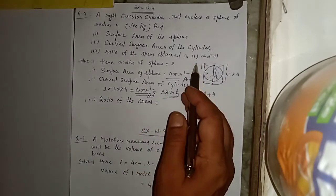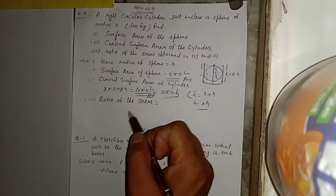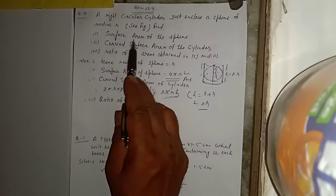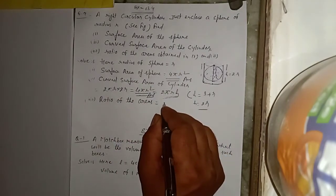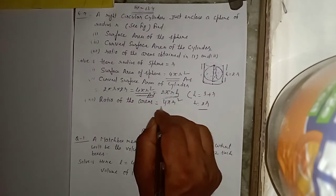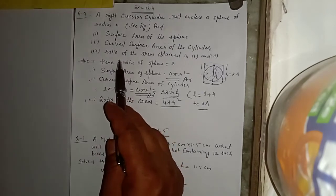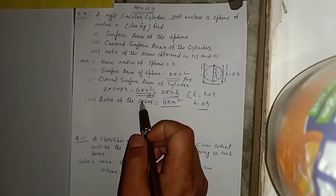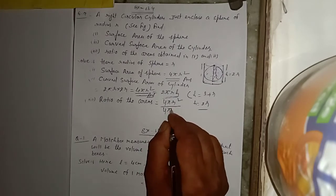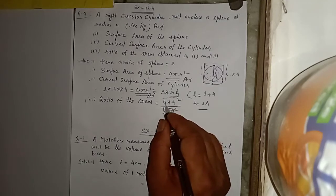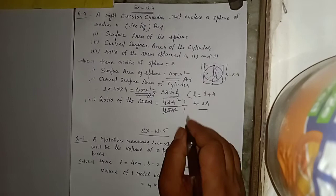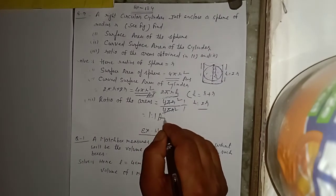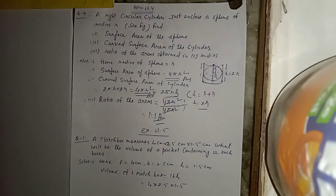Third part में ratio of areas — first and second। Surface area of sphere = 4πr²; curved surface area of cylinder = 4πr²। तो ratio = 4πr² / 4πr² = 1/1। यानि ratio = 1 : 1 — यह आपका answer है। Question number 9 complete हो गया।